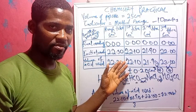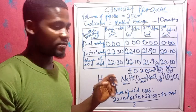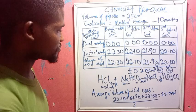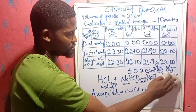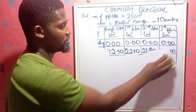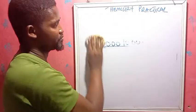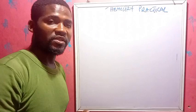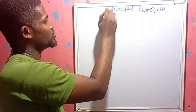In our next video we'll look at calculations on the titration experiment. Before that, to recap: the average volume of acid used is 22.00 cm³. Now, before we go to the calculations, here are the formulas we need to know.